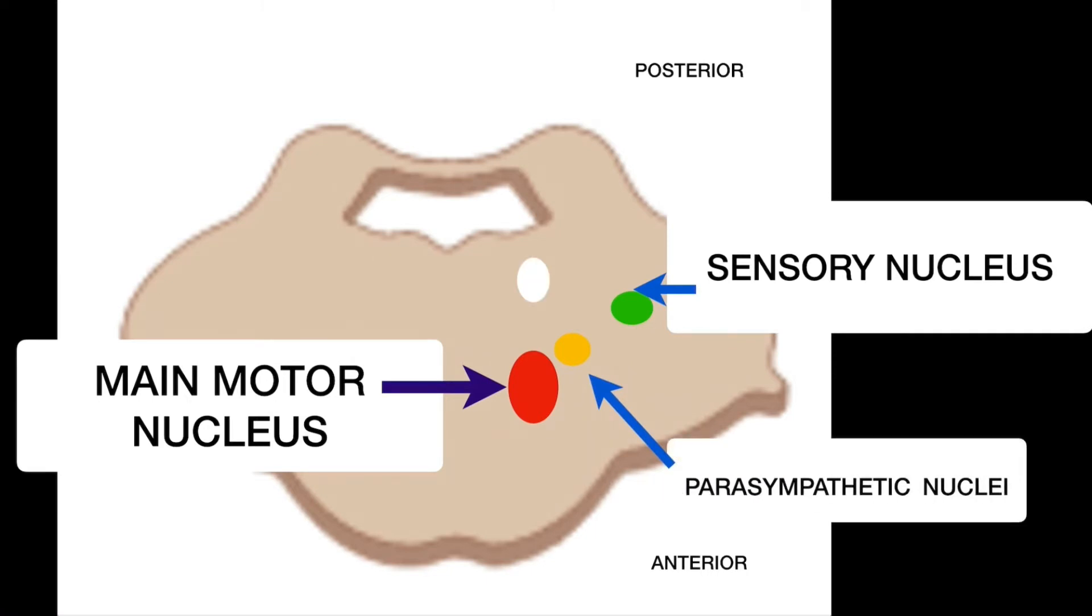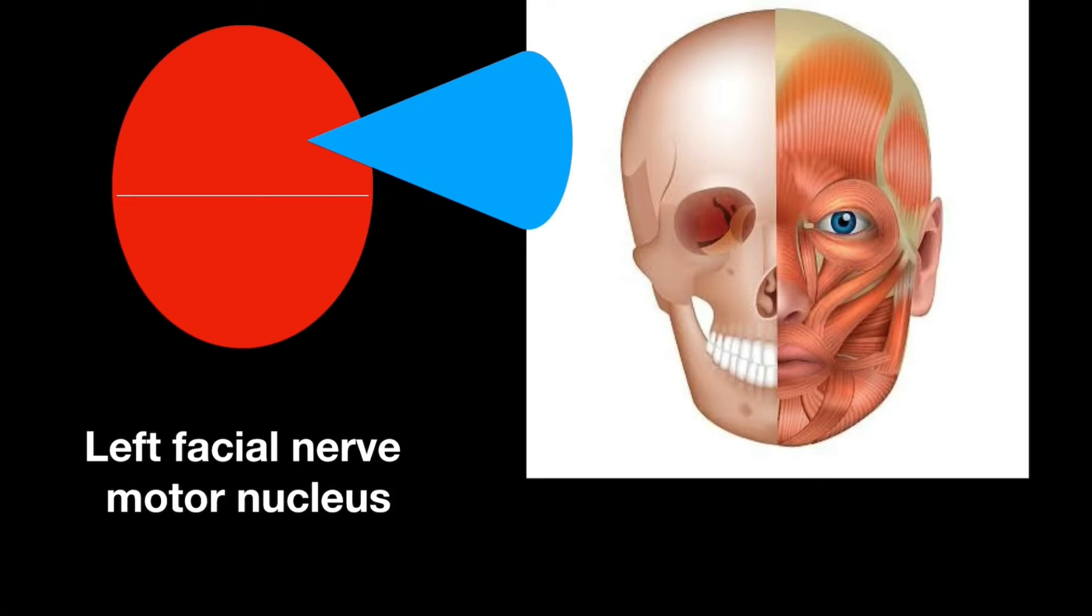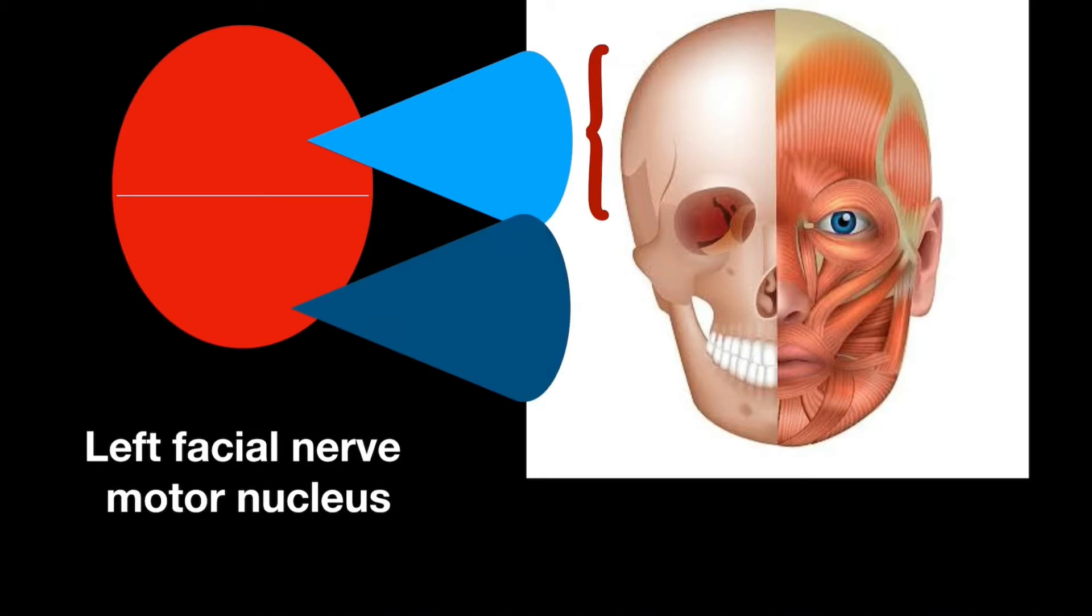The sixth cranial nerve nucleus is also at the same level. Coming to the main motor nucleus, it is divided into two parts by an imaginary line. The upper part supplies upper part of the face including orbicularis oculi and frontalis while the lower part supplies lower part of the face.